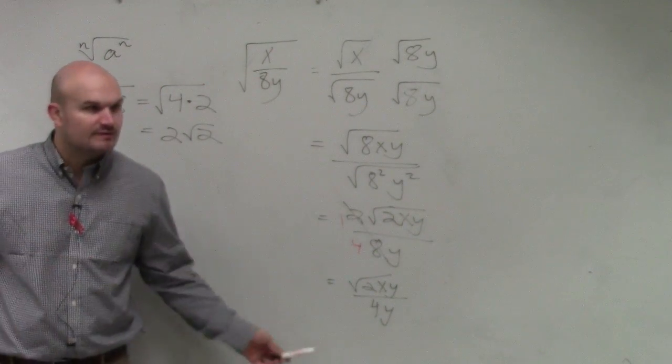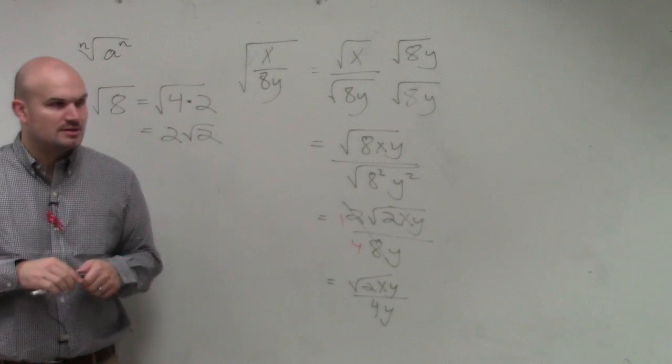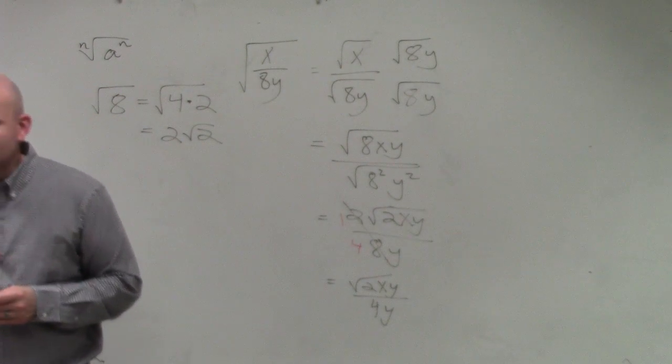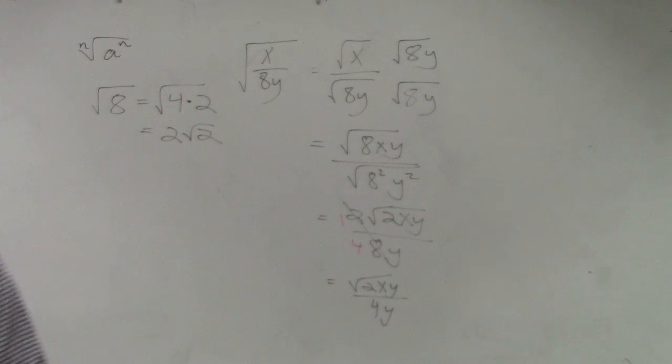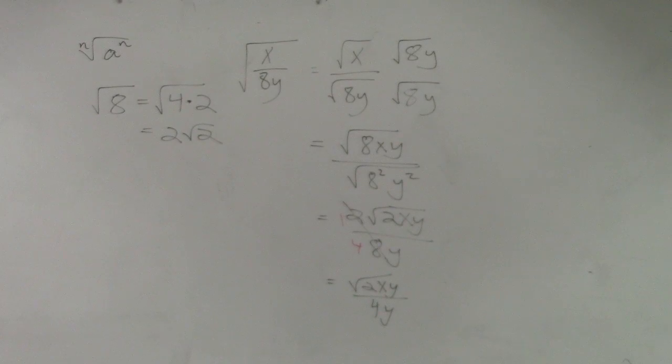So my final answer is that reduces to 1 over 4. 2 over 8 reduces to 1 over 4, right? Yes? No? OK. Where's the what? So that would be number 41. All right.